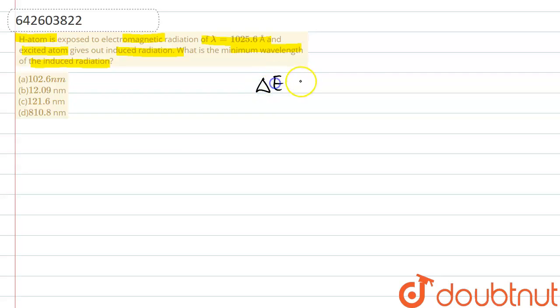We would be using the expression of energy first of all here, that is equal to hc upon lambda. Now we know that hc is a constant over here. h is representing the Planck's constant and c is the velocity of light.